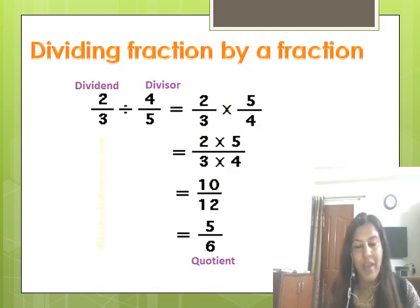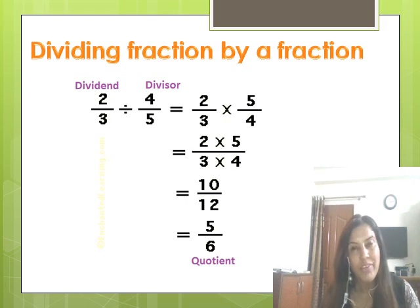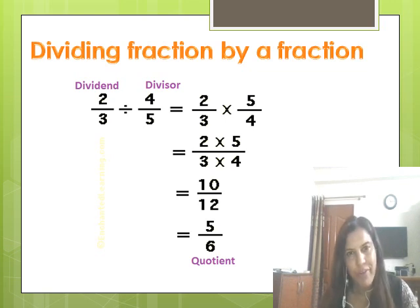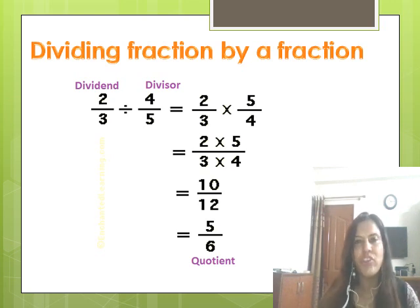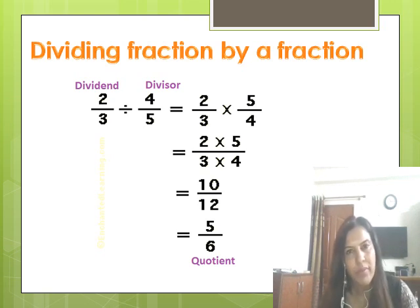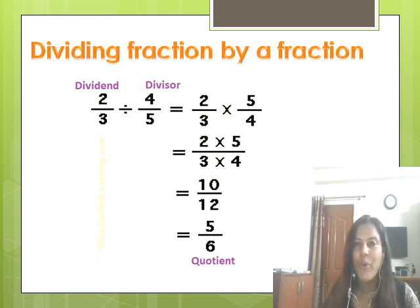I've put a lot of examples for you to practice, as math requires a lot of practice. Look at this example of dividing two fractions: two-third divided by four-fifths. Change the division sign to multiplication, then find the reciprocal of four-fifths, which is five upon four. So two-third divided by four-fifths becomes two-third × five by four. Multiply numerators and multiply denominators to get the answer. Don't forget to reduce it to lowest term. Try it yourself.